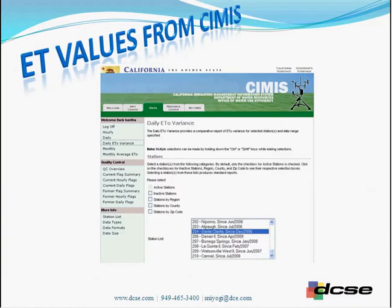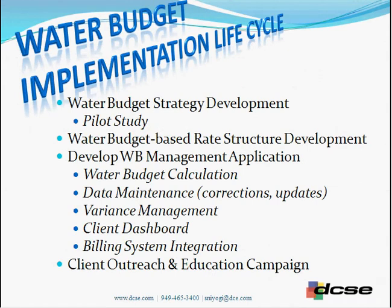This is the CIMIS website in California, where we gather ET values. For water budget management, this is the lifecycle: first, identify a strategy and do a proof of concept or pilot study. The outcome can then be used to generate the rate structure, or to develop the water budget management application — which includes water budget calculations, data maintenance considerations, variance management, a client dashboard, and billing system integration to compare actuals versus budgets. After that, you also need a client outreach and education campaign, which is very important for a water budget implementation lifecycle.